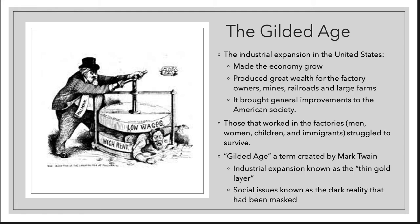The Gilded Age is used to describe industrial expansion in the United States. Industrial expansion allowed the economy to grow and produced great wealth for factory owners, mines, railroads, and large farms. But the general improvements brought to American society came with a cost — the men, women, children, and immigrants who struggled to survive while big businesses grew. The Gilded Age says industrial expansion is the thin gold layer on the outside, and the social issues are the dark reality masked by that thin gold layer.